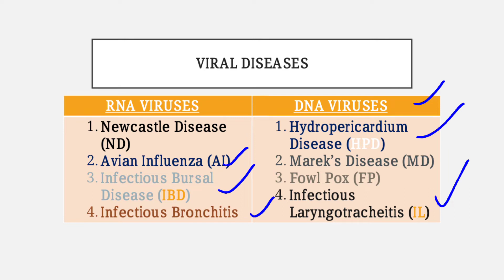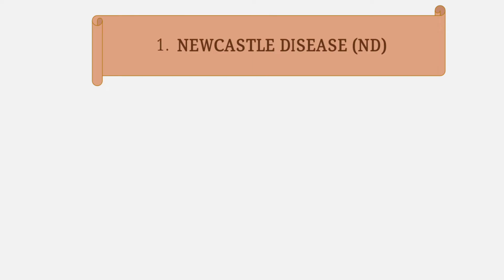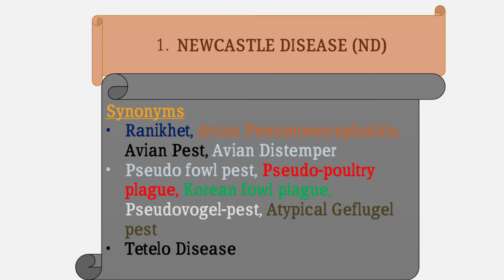Today we will discuss Newcastle disease, whose causative agent belongs to the RNA virus family. Newcastle disease has various synonyms: Ranikhet (a city in India), avian pneumoencephalitis, avian pest, avian distemper, pseudofowl pest, pseudopoultry plague, Korean fowl plague, pseudovogelpest, atypical flu, and titural disease.